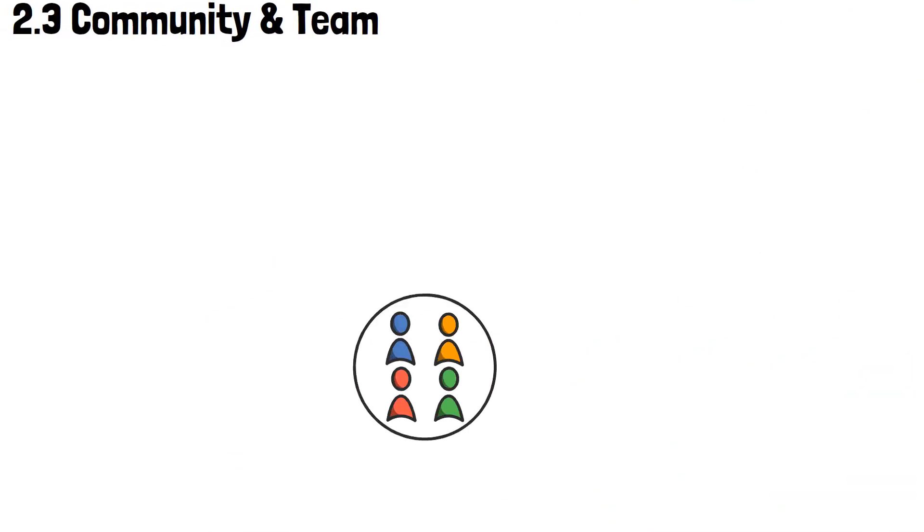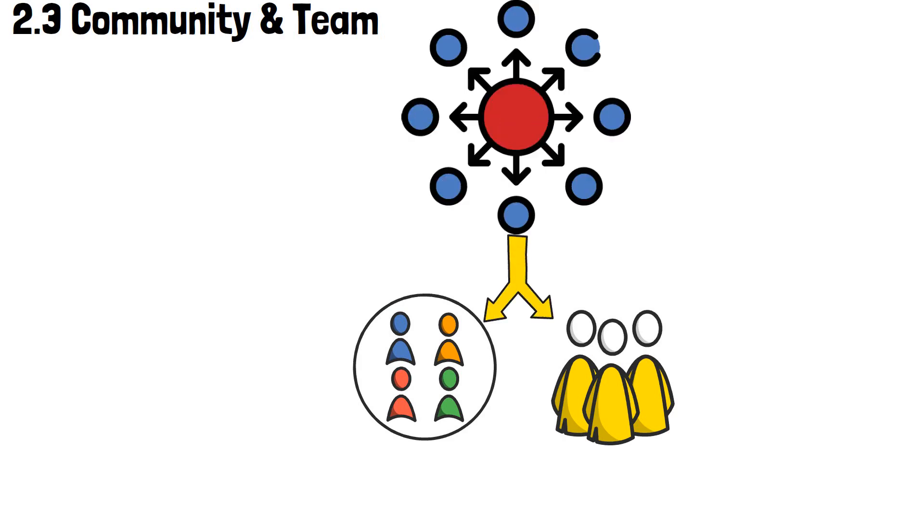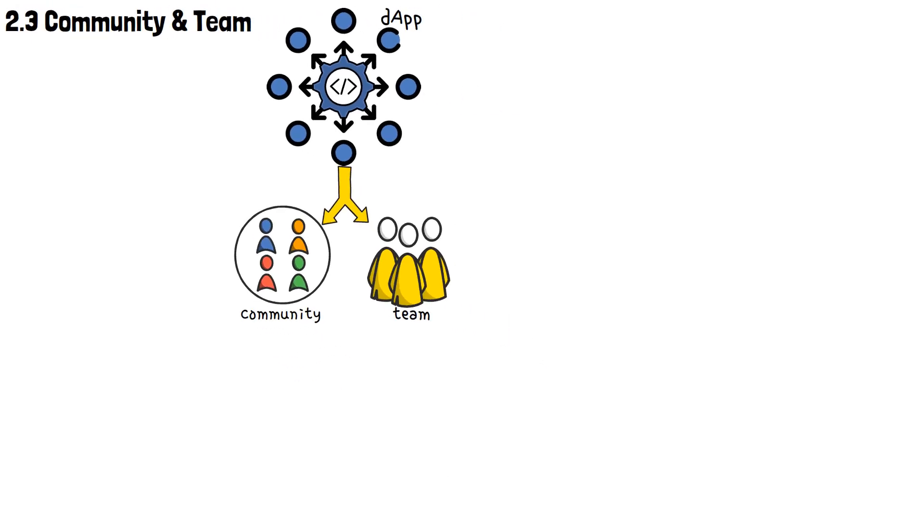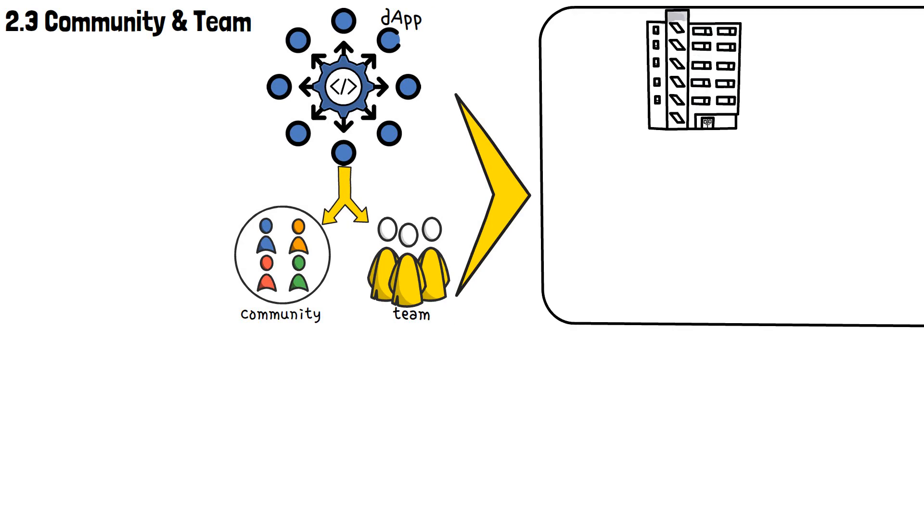Ok, next up on the list is community and team. It's an important indicator that isn't ignored by the best and most popular dApps. The best way to view the importance of community and the team surrounding a particular dApp is this. Let's say that a dApp is an apartment.